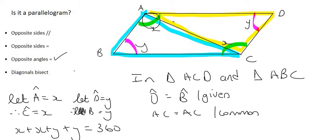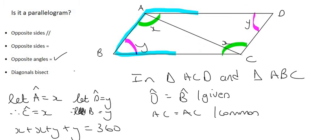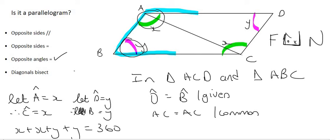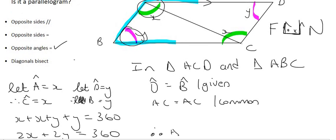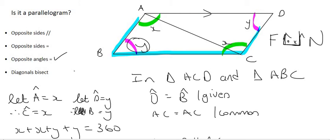Because X + Y = 180, we can recognize the U-shape — when angles between two lines add up to 180, those lines are parallel. Therefore AD is parallel to BC. Similarly, we can see the U-shape on the other side where one angle is Y and the other is X, and because X + Y = 180, those sides are also parallel. So these two lines are parallel and these two lines are parallel.